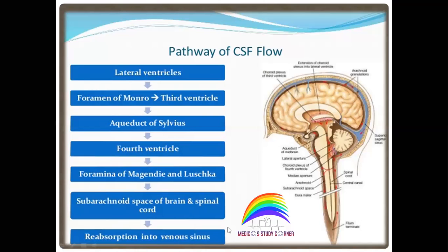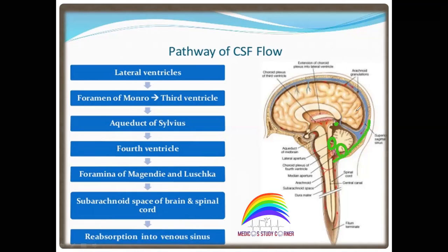Looking at a diagram from the side: the Choroid Plexus is here, producing CSF in the lateral ventricle. From the lateral ventricle it goes to the third ventricle via the foramen of Monro, then through the aqueduct of Sylvius to the fourth ventricle, then through the foramen of Magendie and Luschka into the subarachnoid space — surrounding both the spinal cord and the brain — and finally absorption occurs via the veins. This is the simple CSF flow pathway.